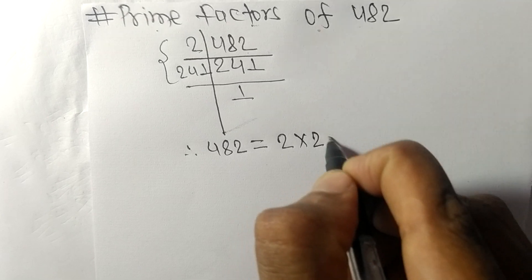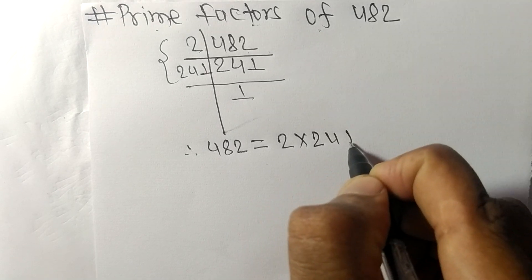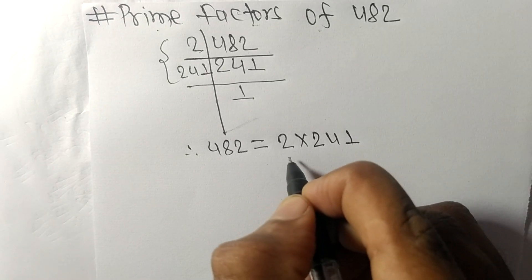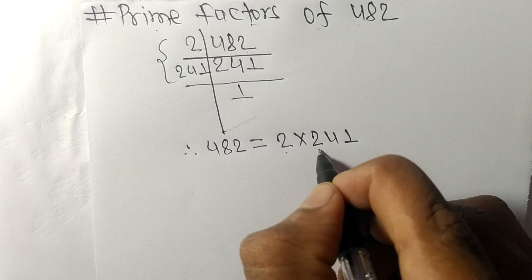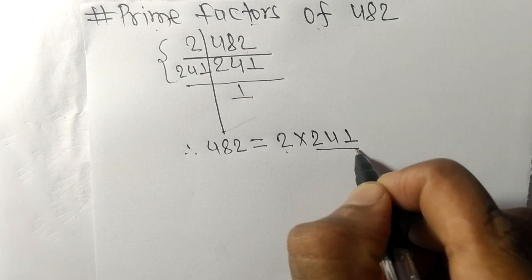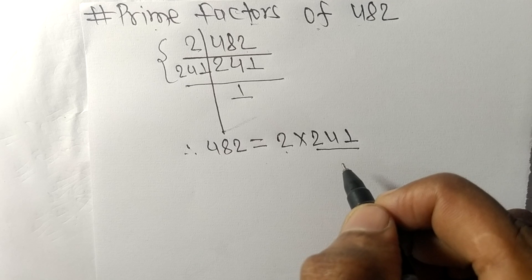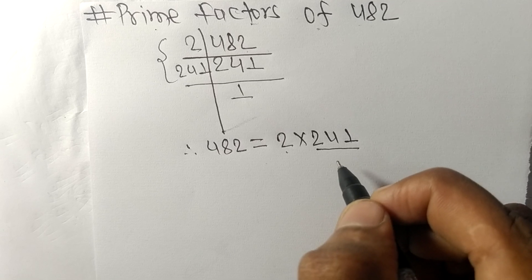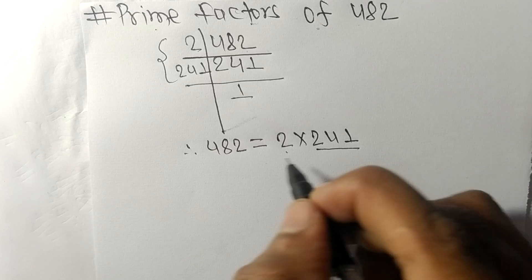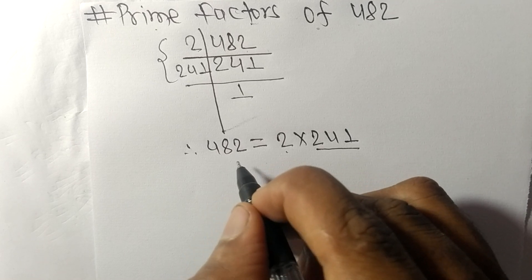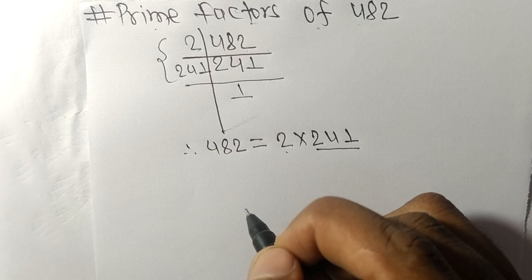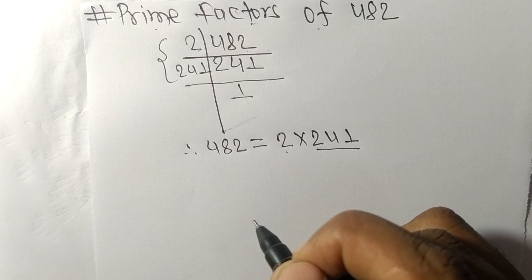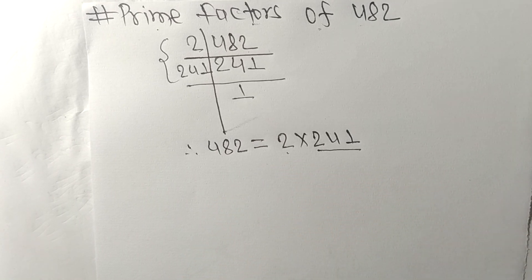So 2 and 241 are the prime factors of 482. That's all for today — thanks for watching.